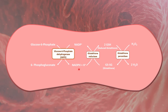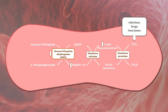NADPH is important for converting oxidized glutathione back to its reduced form. This reduced glutathione protects red blood cells from oxidative damage by oxidants such as superoxide anion and hydrogen peroxide. When G6PD levels are low, it results in low levels of NADPH and consequently low levels of reduced glutathione, increasing susceptibility of red cells to oxidative stress and hemolysis.